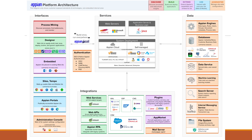Welcome to Lecture 3. Today we will be discussing Appian platform architecture. In Appian platform architecture we have services, integration, data, and interface. Interfaces, integrations, and data are connected with the help of services like Apache and application servers like Java. To access these services we can authenticate using SSO or native Appian authentication.